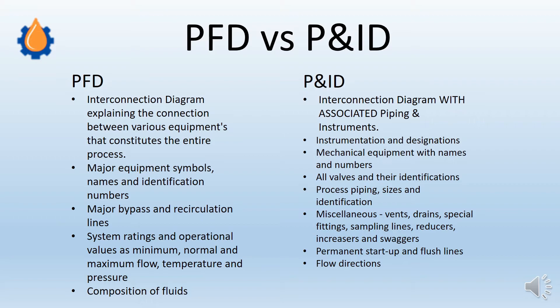Major bypass and recirculation lines that are part of the process are shown in the PFD, and later in the P&ID we do detailed engineering of these systems. System ratings and operational values — minimum, normal, and maximum flow, temperature, and pressure — are available in the PFD. The composition of the fluid, such as the constituents of crude oil or a gas like methane, is also available in the PFD.